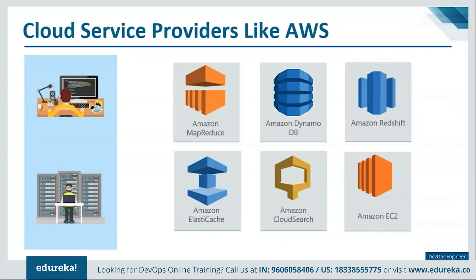Apart from source code management, DevOps engineers should also have experience deploying applications on Amazon AWS, Google Cloud, or Azure. There is a shortage of people who understand IaaS versus PaaS, stateful versus stateless, and loosely coupled architecture. It is no longer about forklifting existing servers to the cloud — it's about designing and deploying applications using the best that Amazon, Azure, and Google have to offer in terms of compute, network, and storage resources.